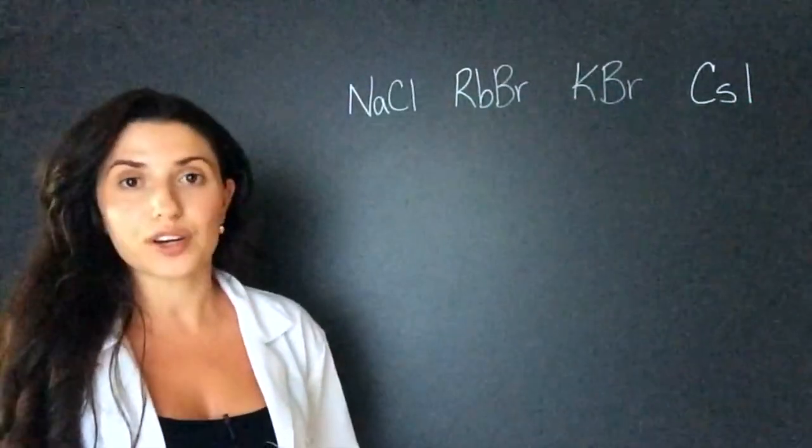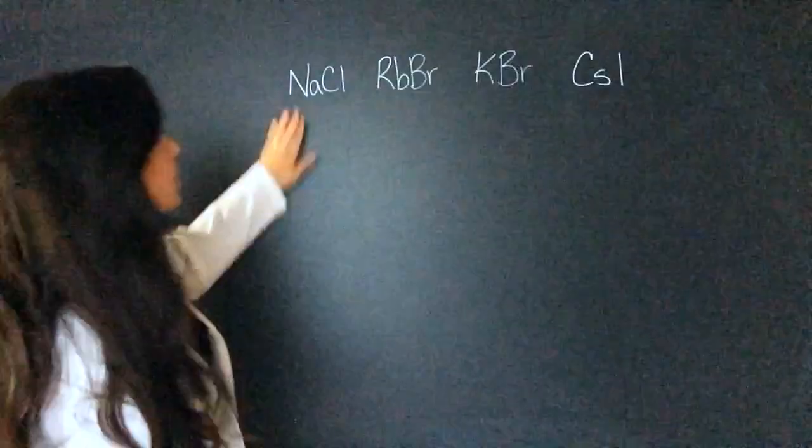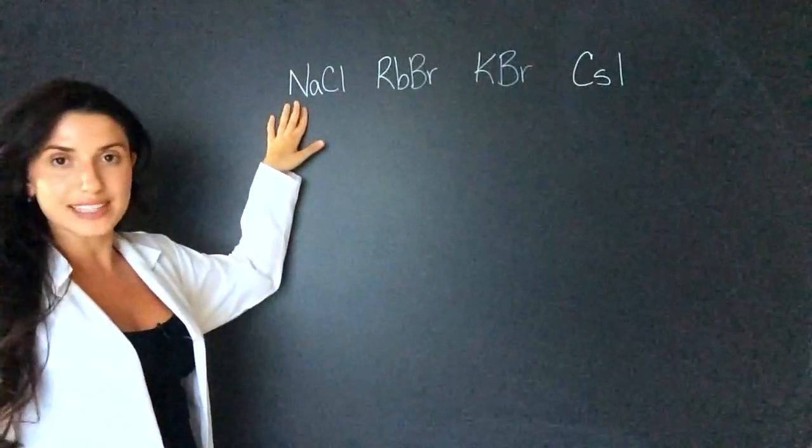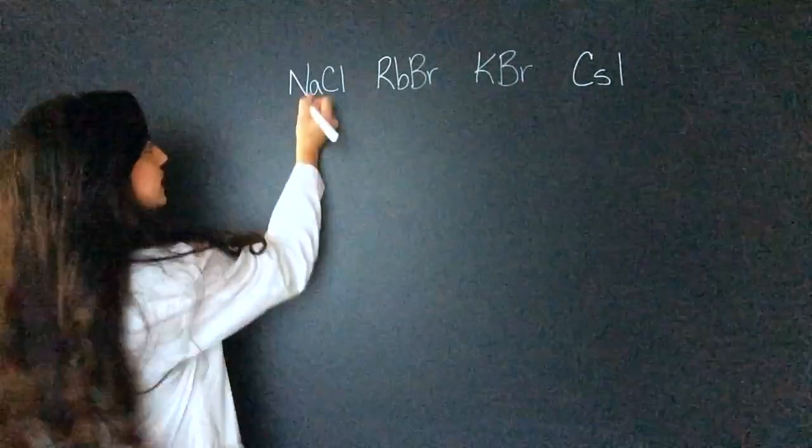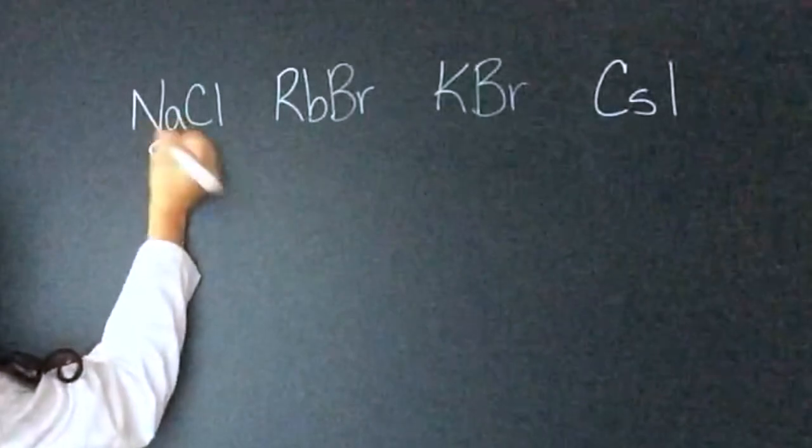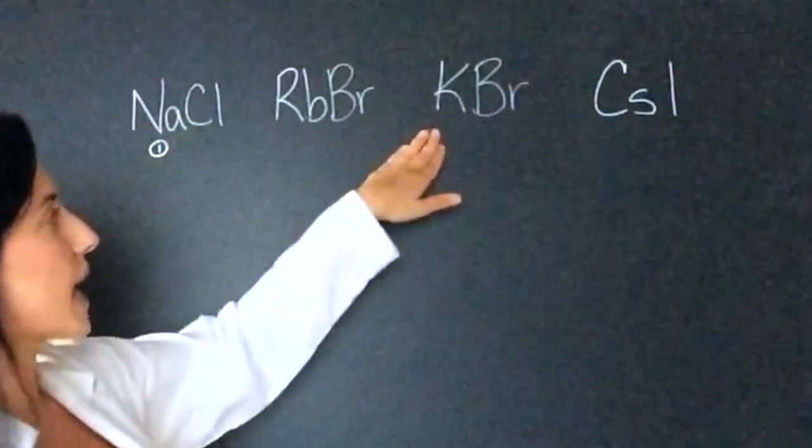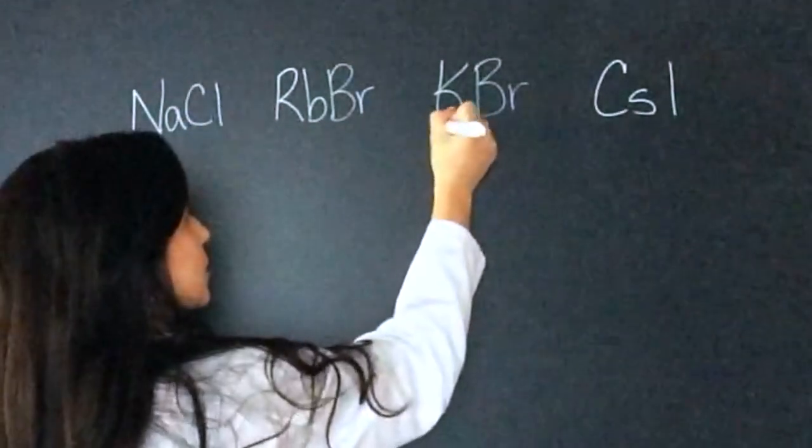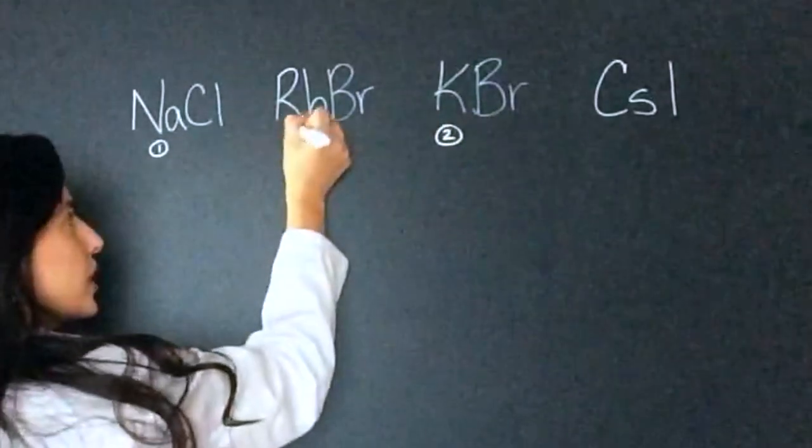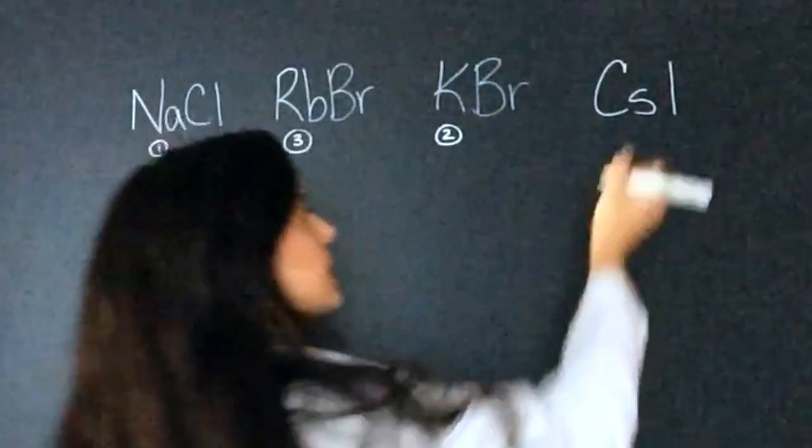I'm going to put these in order of smallest to biggest. So I know according to the periodic table sodium is the smallest, so one. Then I know potassium comes, two. Then rubidium, three. Then cesium.